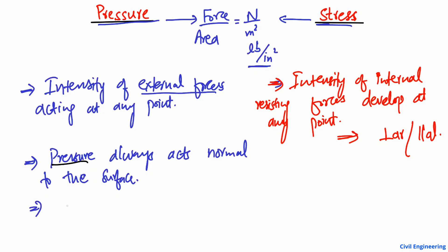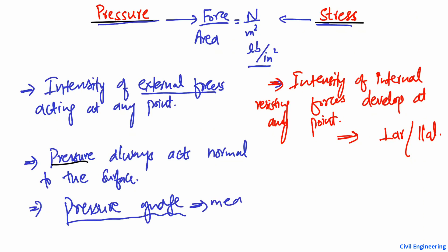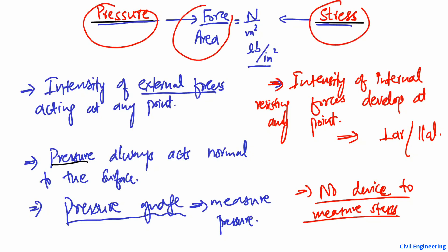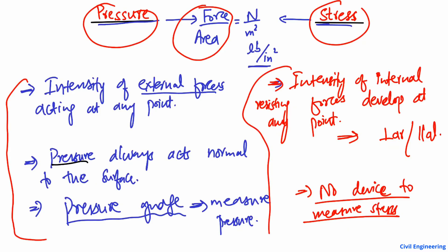The third difference is that pressure can be measured by a measuring device — for example, a pressure gauge is used to measure the quantity of pressure. But on the other hand, for stress, there is no device to directly measure it. This is also one of the differences between these two terms, which otherwise share the same formula of force per unit area.